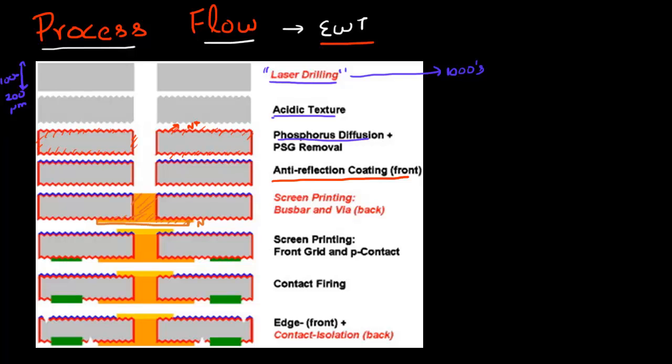Then you need to form a P contact separately, so you need to do another set of contact formation. You might need to form a P plus junction for that, or do a contact firing to form that P plus region and the P contact. Many times a laser is used to essentially separate these P and N contacts. You do this contact isolation using a laser to make sure that these P and N bus bars don't short with each other.